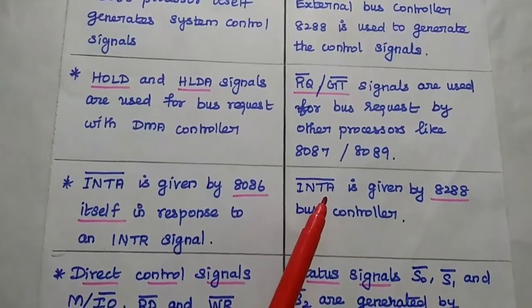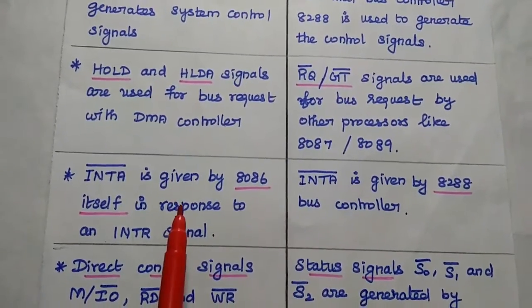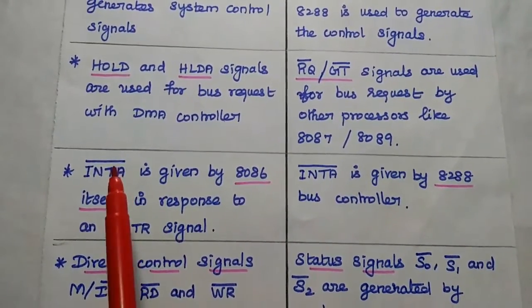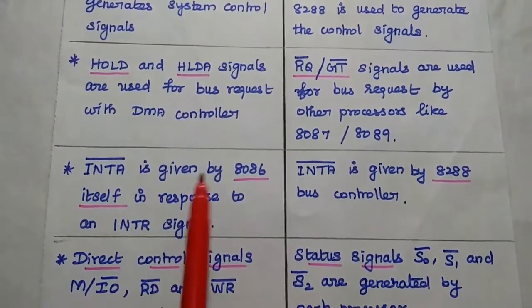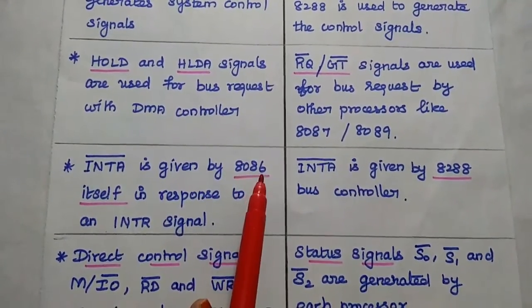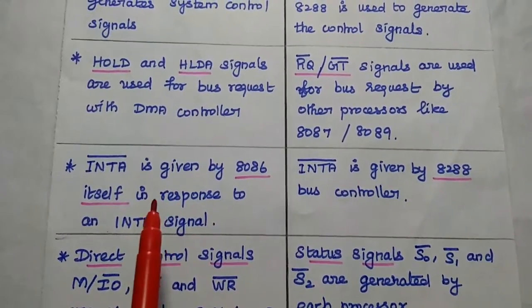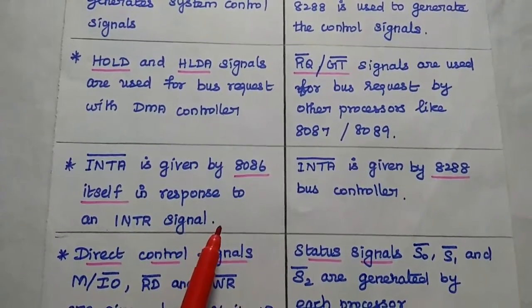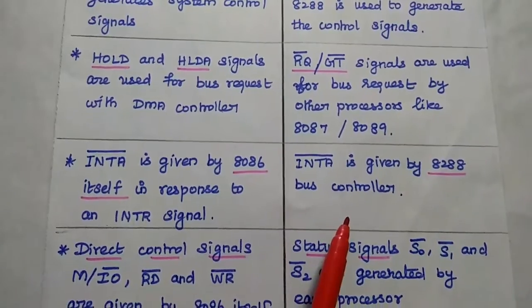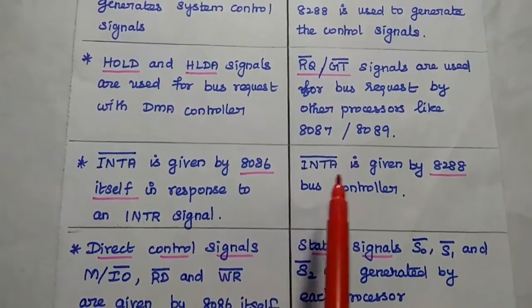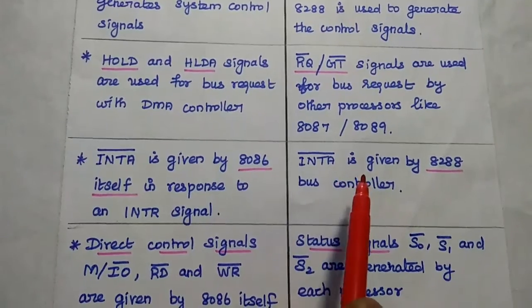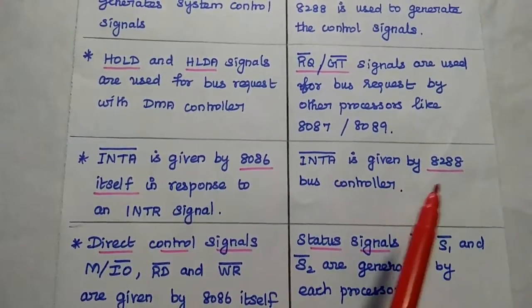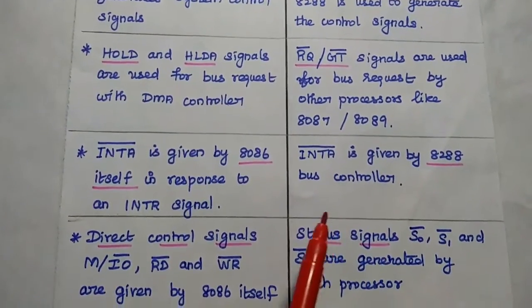In minimum mode, INTA bar, that is interrupt acknowledgement signal, is given by 8086 processor itself to respond to that interrupt request signal. But in maximum mode, INTA bar is given by 8288 bus controller.